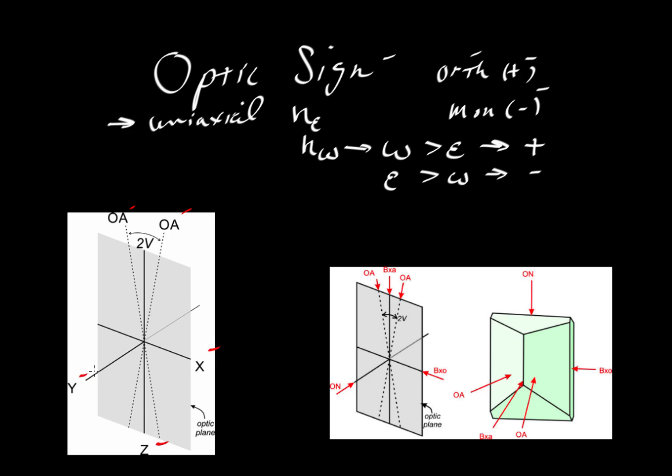For the case of biaxial positive, we are concerned about the value for N-beta. This is N-alpha, and this is N-gamma. This is N-beta.